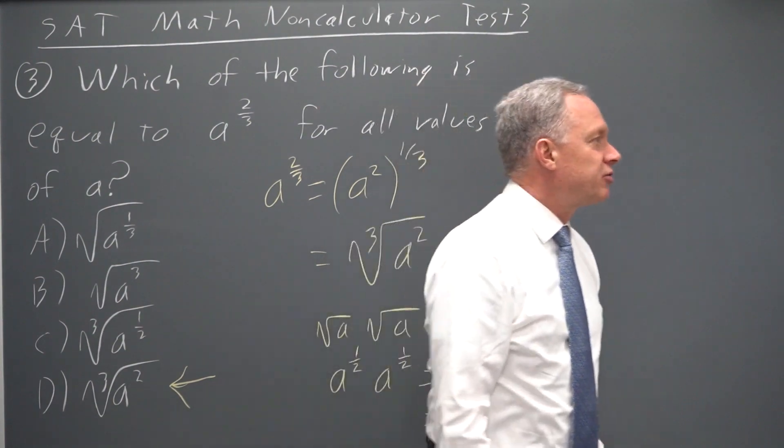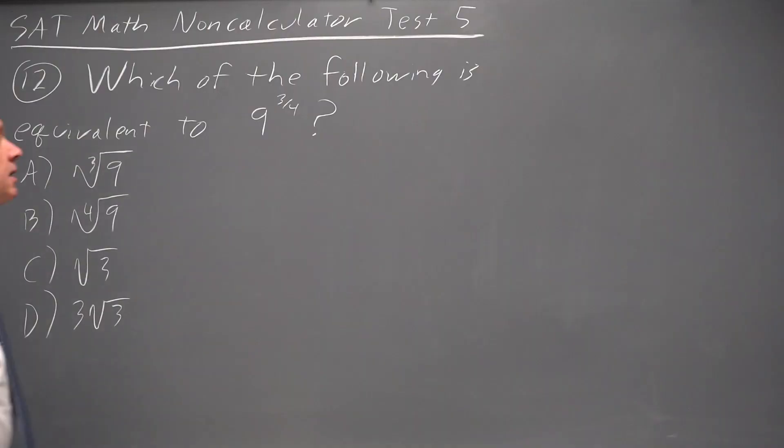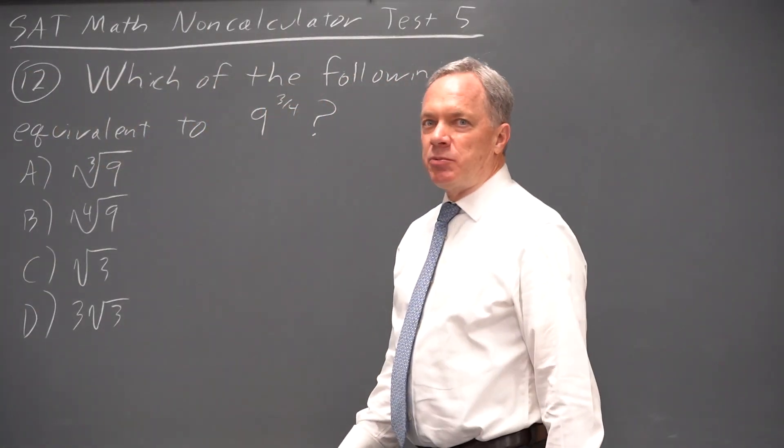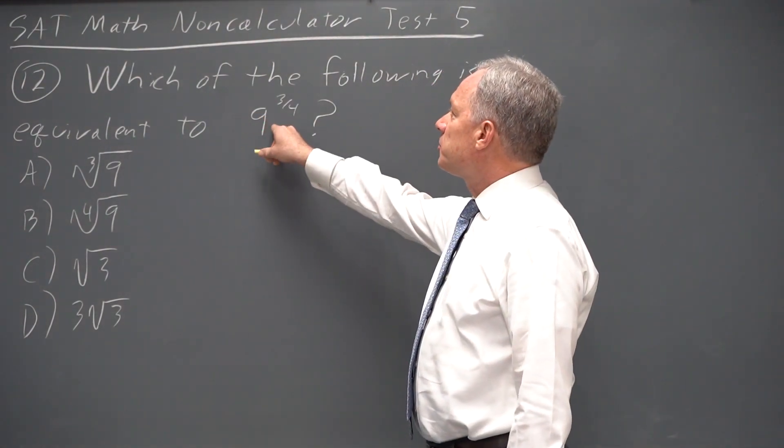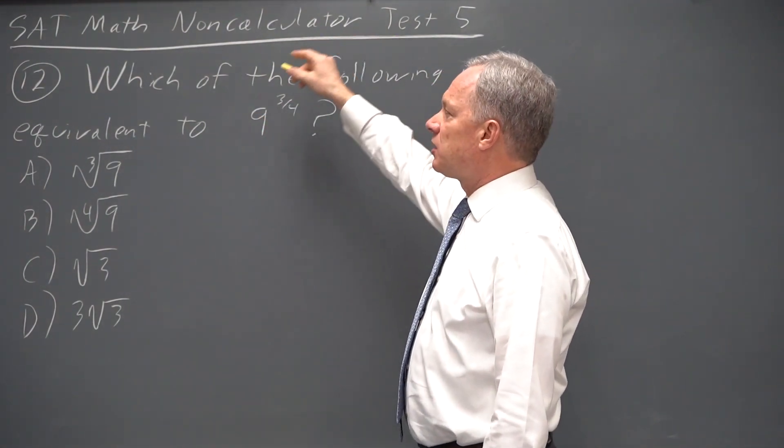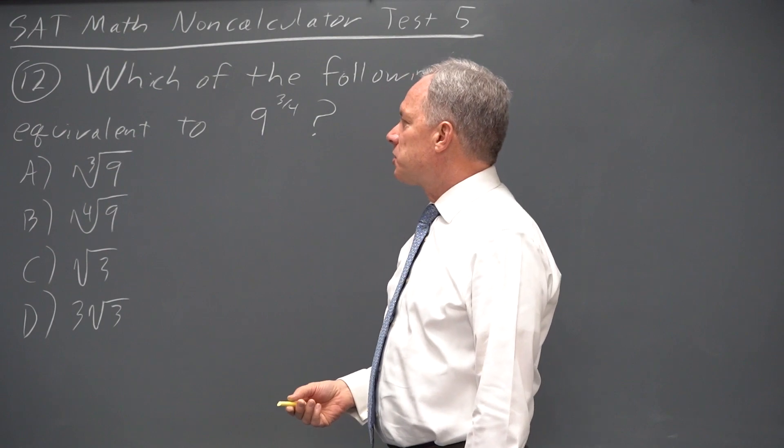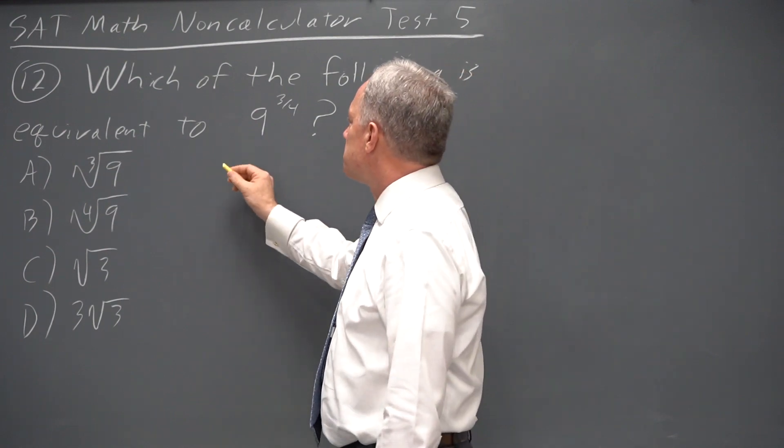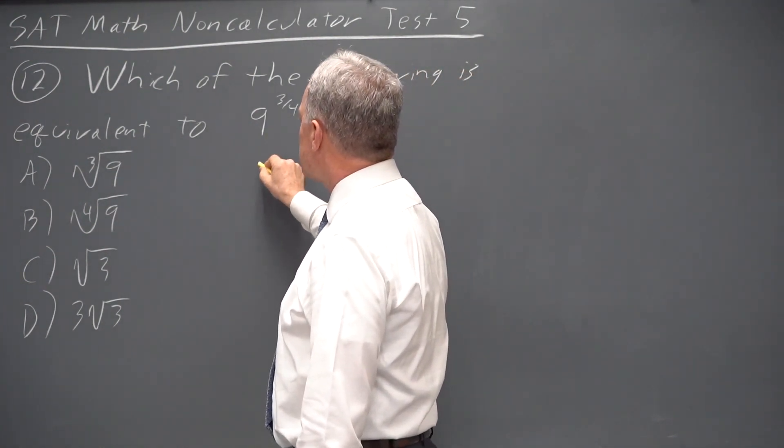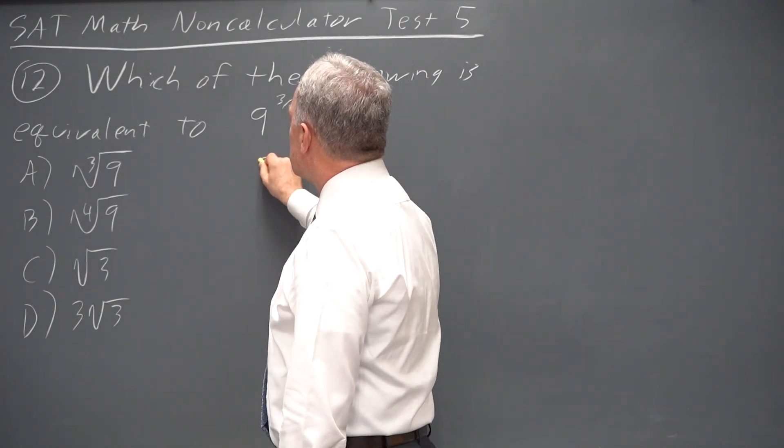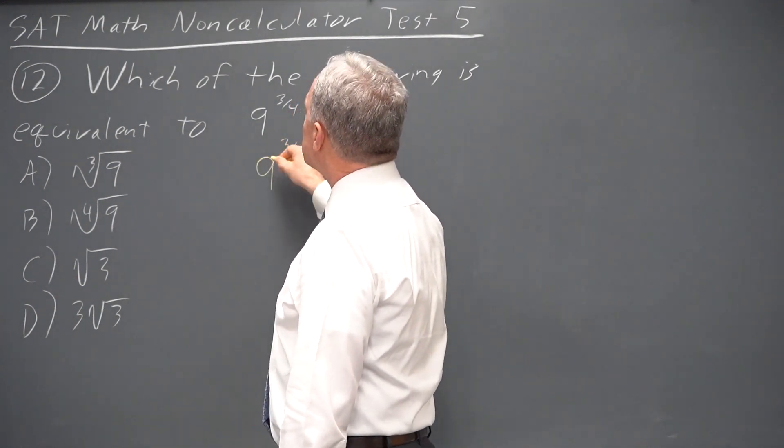Let's continue on to our final question from test five. Continuing on with exponent rules, again, rational exponents. This is non-calculator test five, question twelve, so College Board considers this much harder than the one I just did.